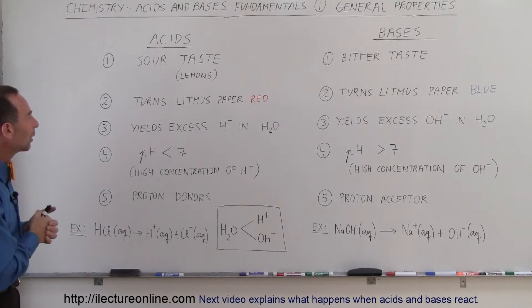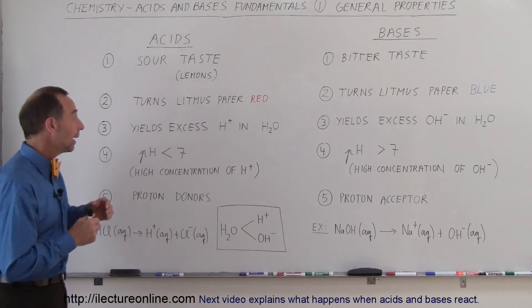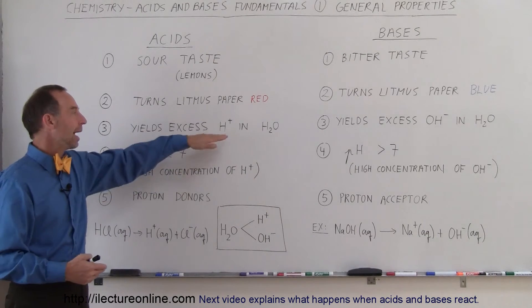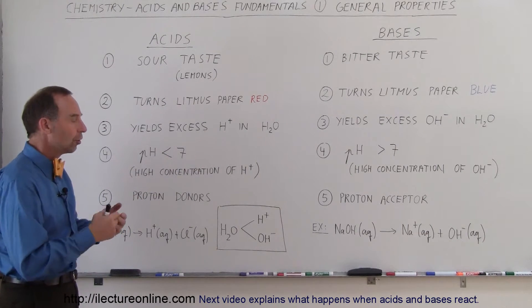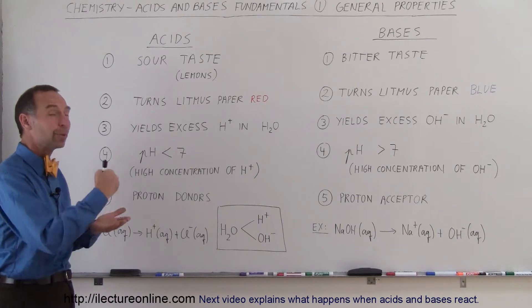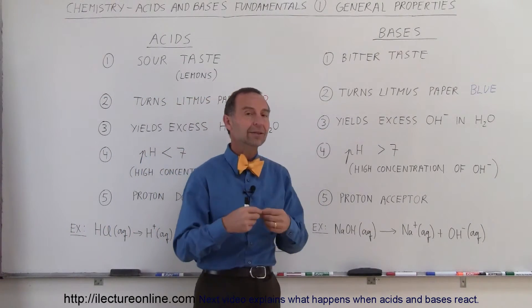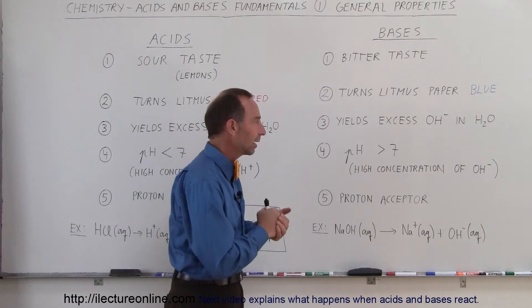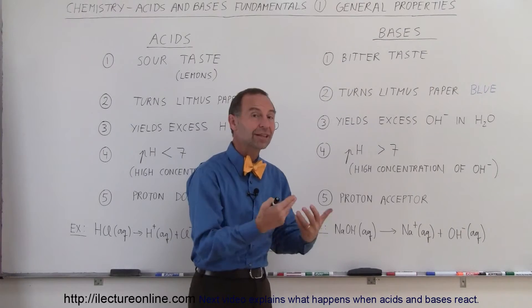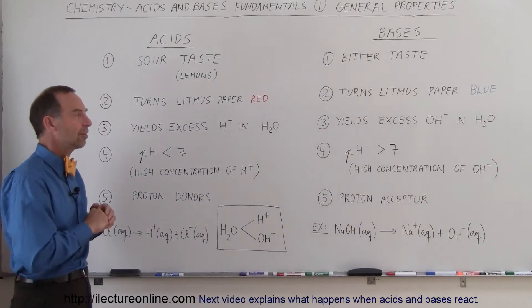The third property that we look at is what it does when you put an acid and base in water. When you put an acid in water, it yields an excess of hydrogen ions, H+, and they're positively charged. In opposition to that, when you put a base in water, it will yield an excess of the hydroxide ion, OH-. So that's another way in which you can differentiate between acids and bases.